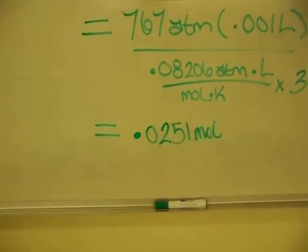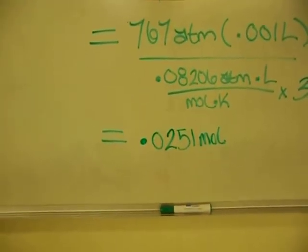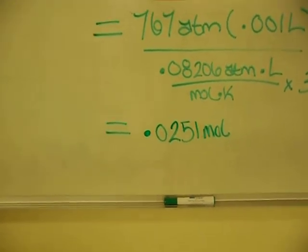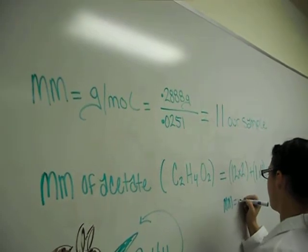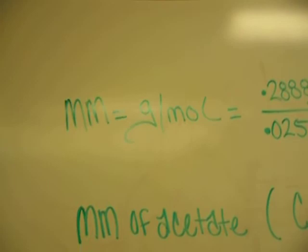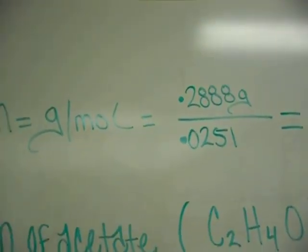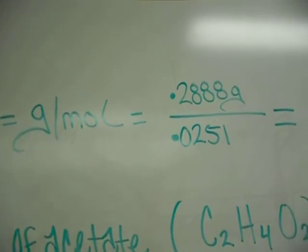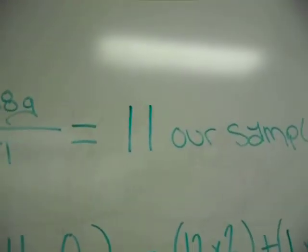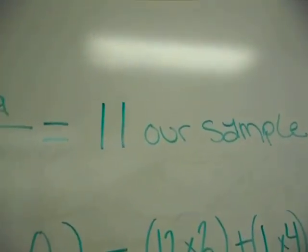Our resulting moles of our substance was 0.0251 moles. Therefore, the molecular mass of our substance was grams over moles, 0.2888 grams all over 0.0251 moles, equals 11, the molecular mass of our sample.